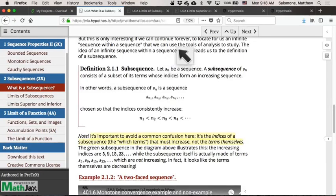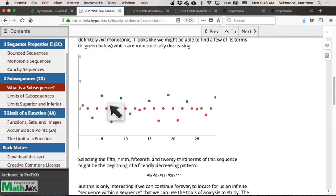If you have a sequence, Sn, and after a while I start calling this the parent sequence, so this is a sequence as in the way that we're used to thinking about them, then to select a subsequence out of a parent sequence is the same as just selecting some infinite collection of its terms.